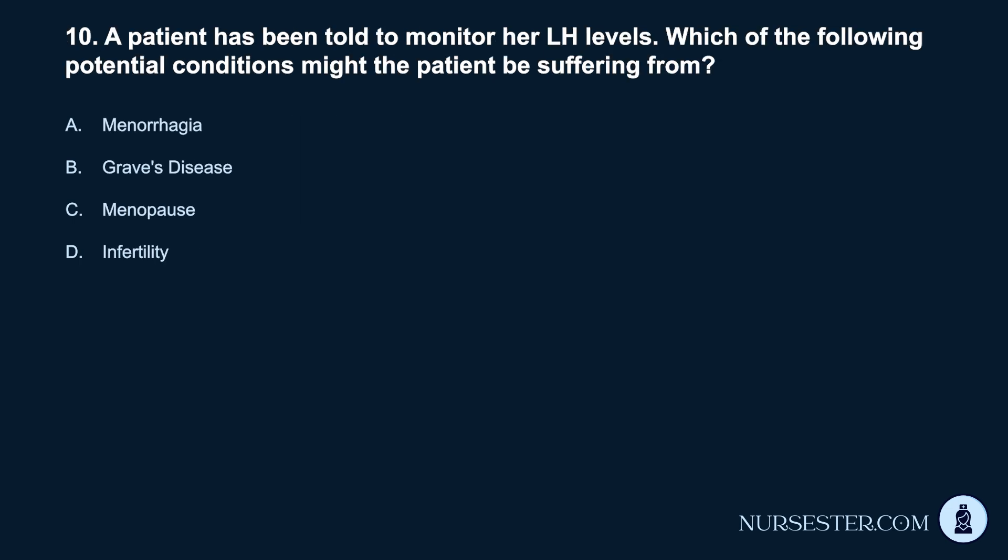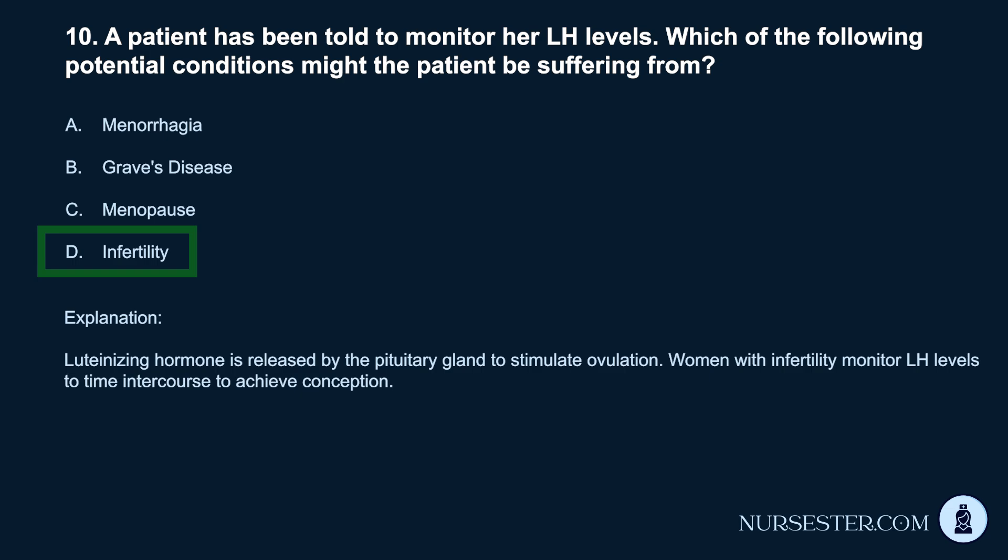Question 10. A patient has been told to monitor her LH levels. Which of the following potential conditions might the patient be suffering from? a. Menorrhagia. b. Graves' disease. c. Menopause. d. Infertility. Correct answer: d. Infertility. Luteinizing hormone is released by the pituitary gland to stimulate ovulation. Women with infertility monitor LH levels to time intercourse to achieve conception.